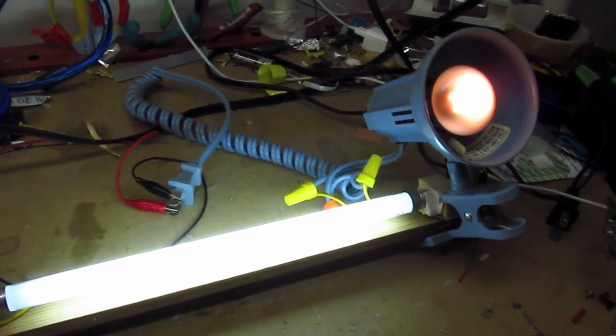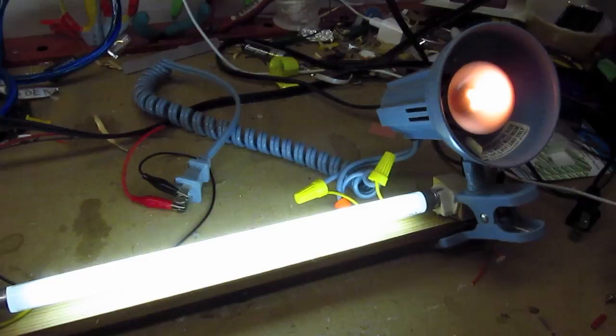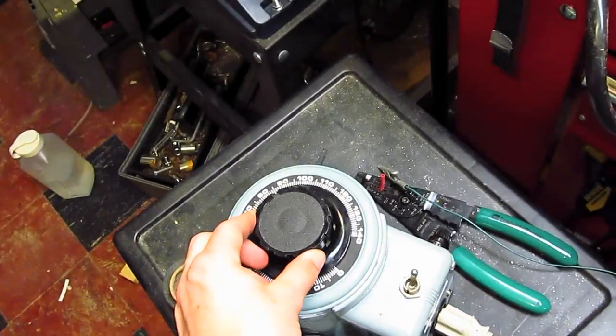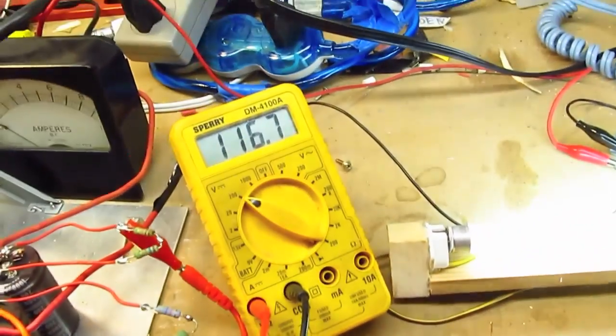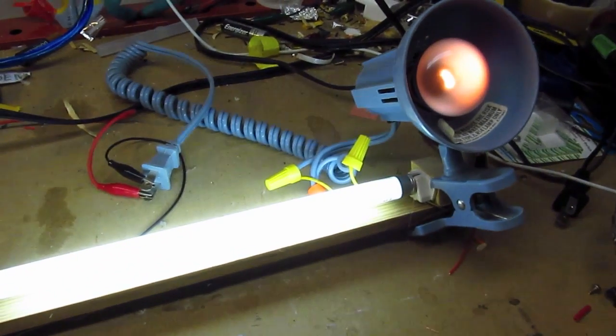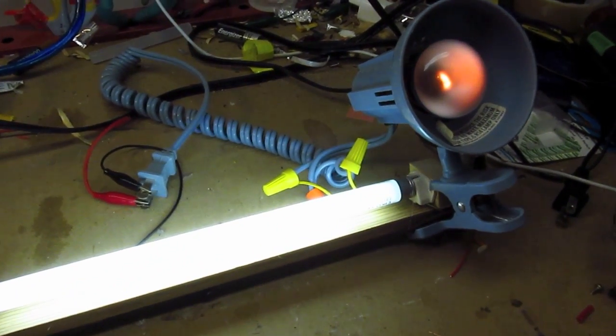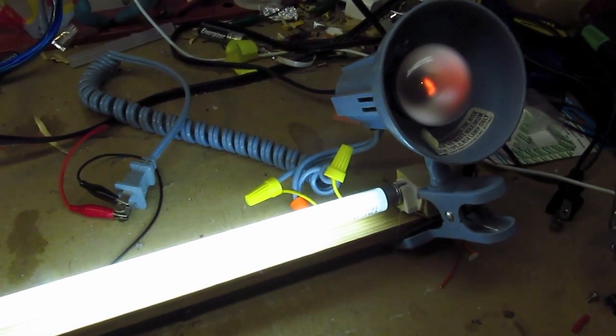Now another very interesting thing I can do is if I turn the variac down and just reduce the voltage, the tube itself doesn't get too much dimmer but the incandescent light bulb does.